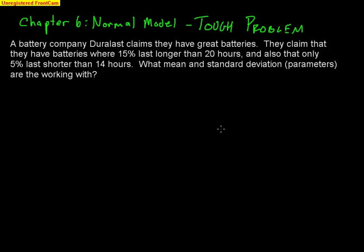Here's the idea. We have a company called Duralass — they make batteries. They claim that 15% of their batteries last longer than 20 hours, and also that only 5% last shorter than 14 hours. What they're asking us is: what mean and standard deviation are their batteries working with? These are parameters — mean and standard deviation — which are theoretical values from the normal model. They don't give us either one; we have to find those values on our own.